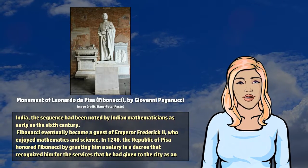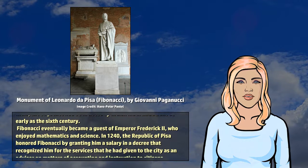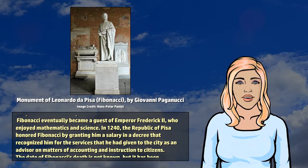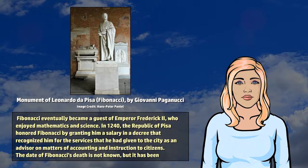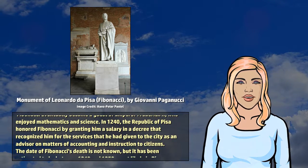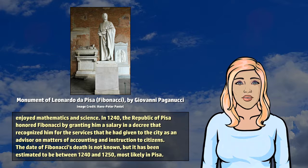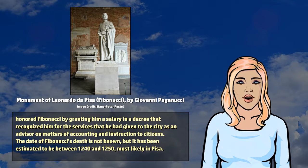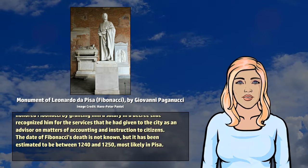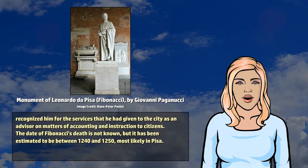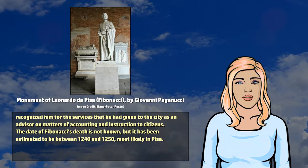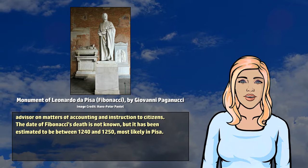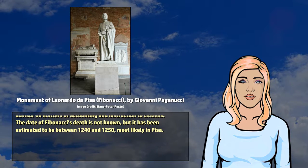Fibonacci eventually became a guest of Emperor Frederick II, who enjoyed mathematics and science. In 1240, the Republic of Pisa honored Fibonacci by granting him a salary and a decree that recognized him for the services that he had given to the city as an advisor on matters of accounting and instruction to citizens. The date of Fibonacci's death is not known, but it has been estimated to be between 1240 and 1250, most likely in Pisa.